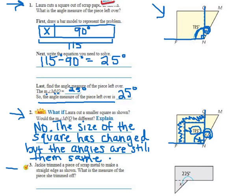Alright, and last one. There's still a number four on this page, but we're only doing through number three. Number three says, Jackie trimmed a piece of scrap metal to make a straight edge as shown. What is the measure of the piece that she trimmed off? So, she wanted to make this straight edge right here. So, she cut off X.